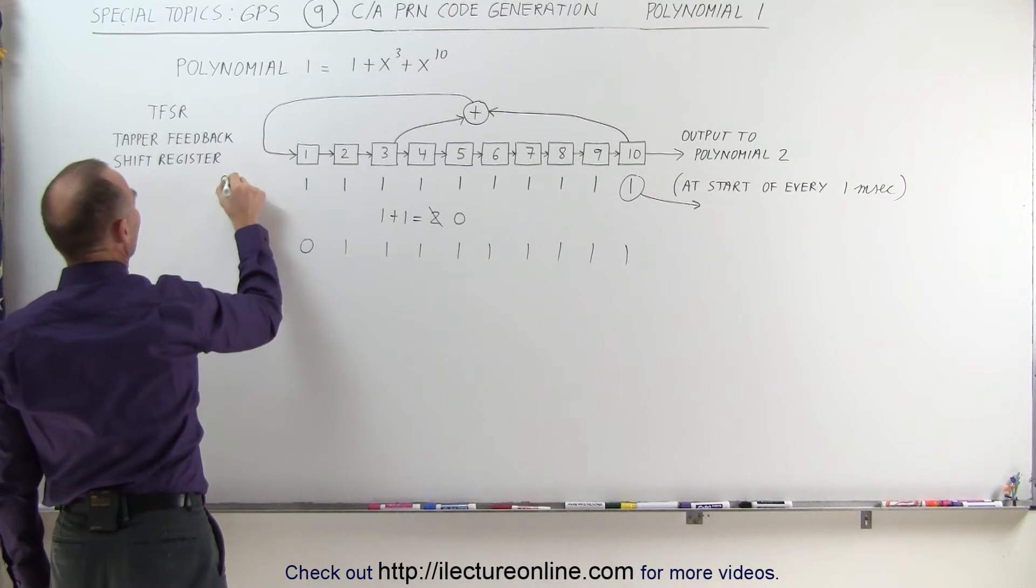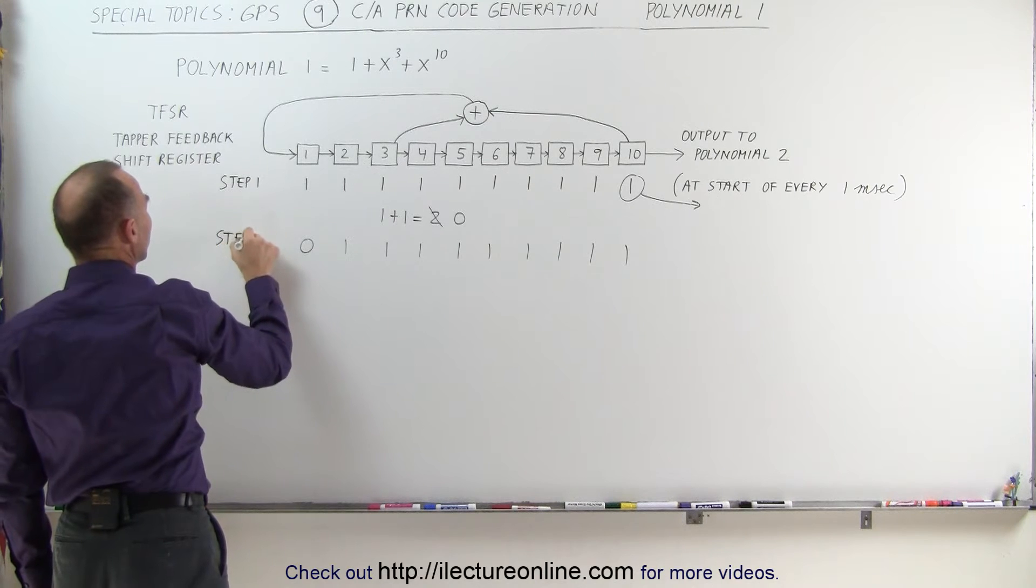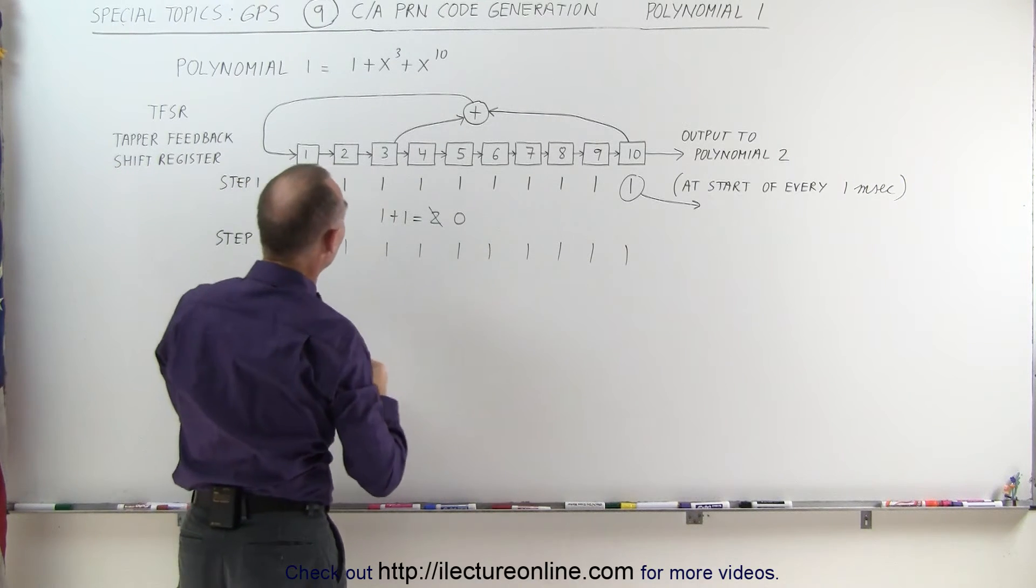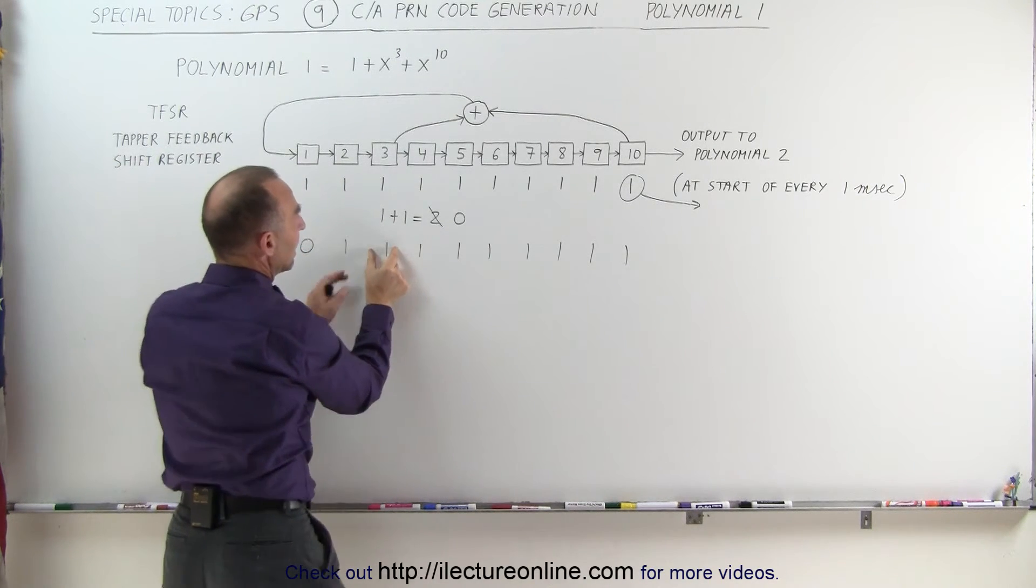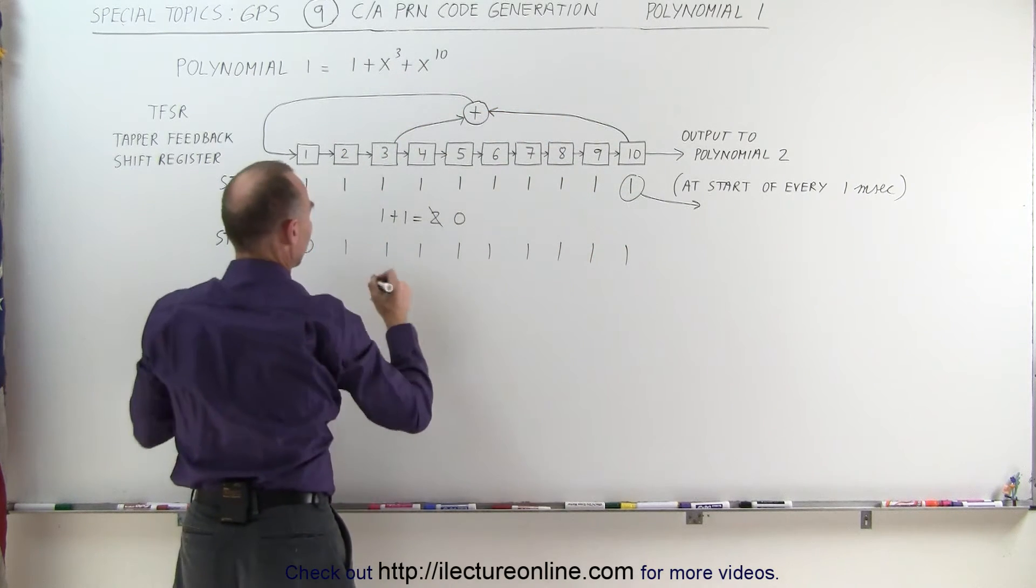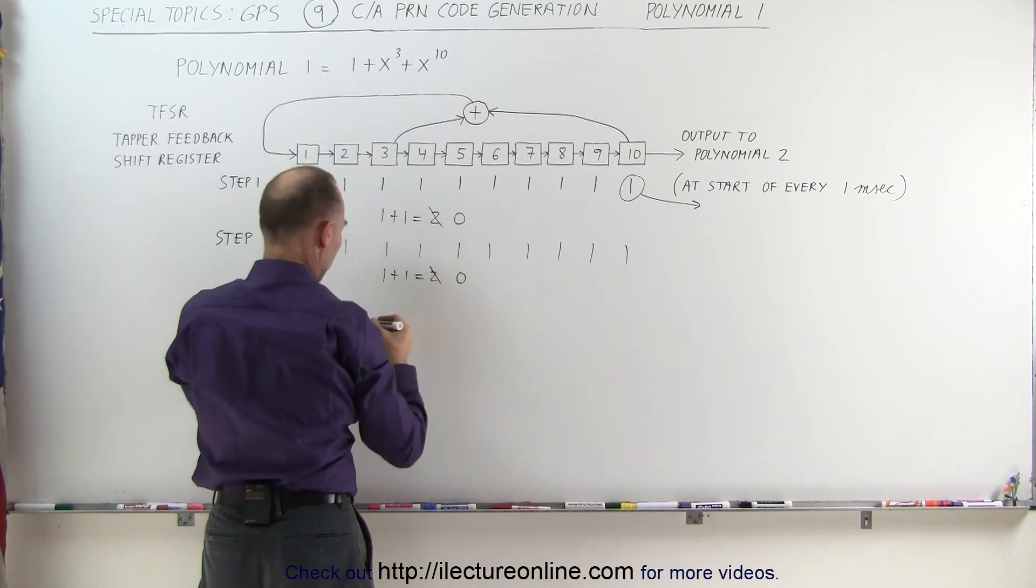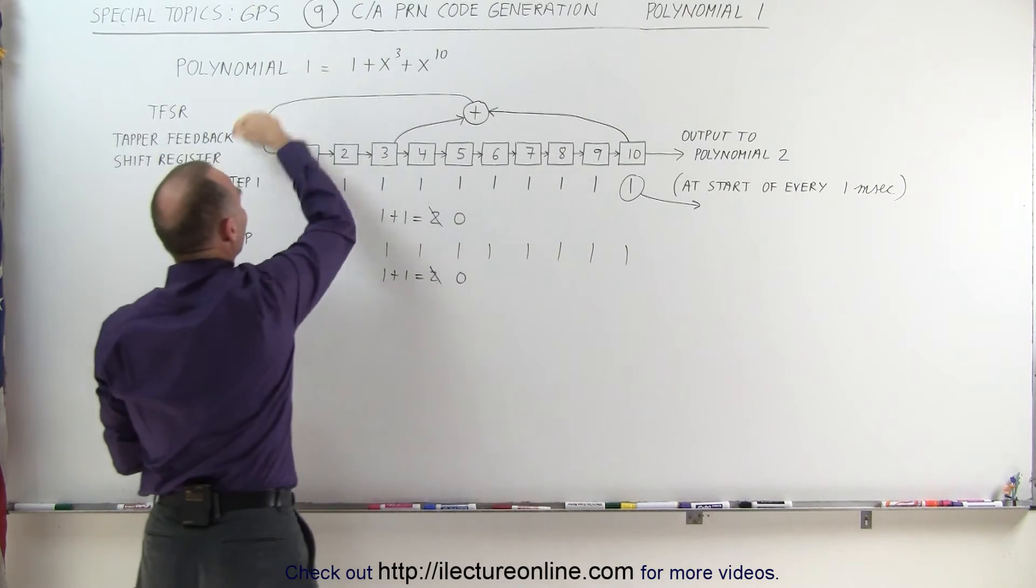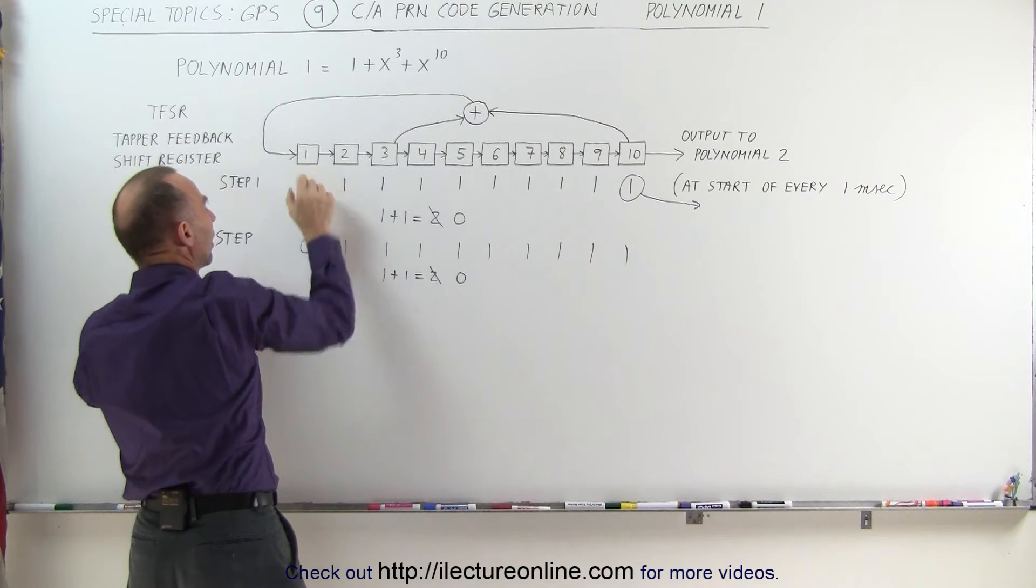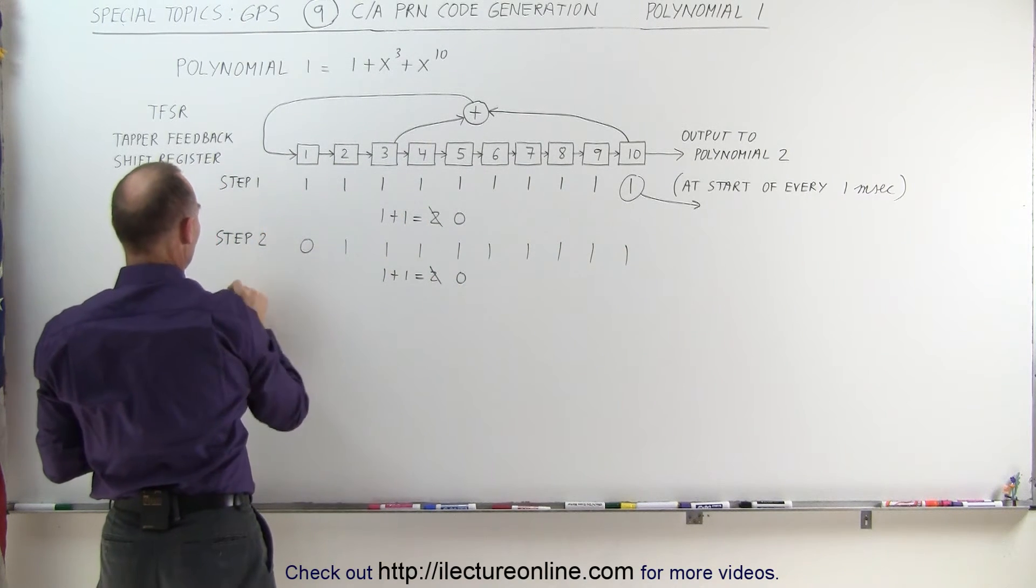This would then be, so call this step 1, we'll call this step 2. In step 2, we're going to take the contents of 3 and the contents of 10, sum them together, a 1 plus 1. 1 plus 1 equals 2, which again becomes a 0. And that means that this 0 gets fed into position 1, everything else shifts over 1. So this is step 2.